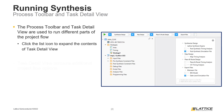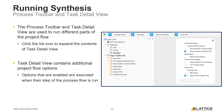The main difference between the process toolbar and task detail view is that the task detail view contains several additional options which can be enabled or disabled using the checkbox next to each option's name. Whenever a step is run, any enabled options within that step will also be executed. For example, if the post-synthesis simulation file option is enabled, a post-synthesis simulation file will be generated whenever synthesis is run.